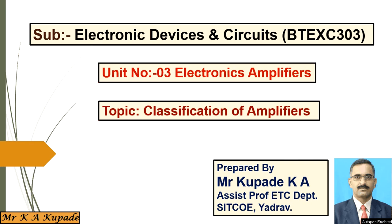Up to this point, we have discussed the MOSFET as well as the JFET — their characteristics, construction, operation, and some analysis. Now today, we are going to start the new unit, unit number three, and its name is electronics amplifiers. In this new unit, we are going to start with the first topic: the classification of amplifiers.